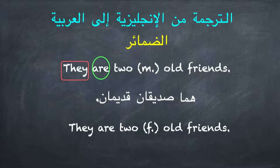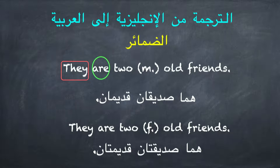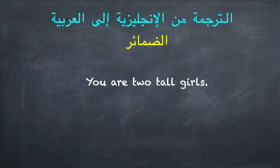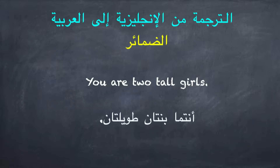فلننظر إلى الجملة حيث تأتي كلمة 'friends' مؤنثة: 'They are two feminine old friends' = وهما صديقتان قديمتان. لاحظوا أن الصفة مؤنثة مثل موصوفها. 'You are two tall girls' = أنتما بنتان طويلتان.